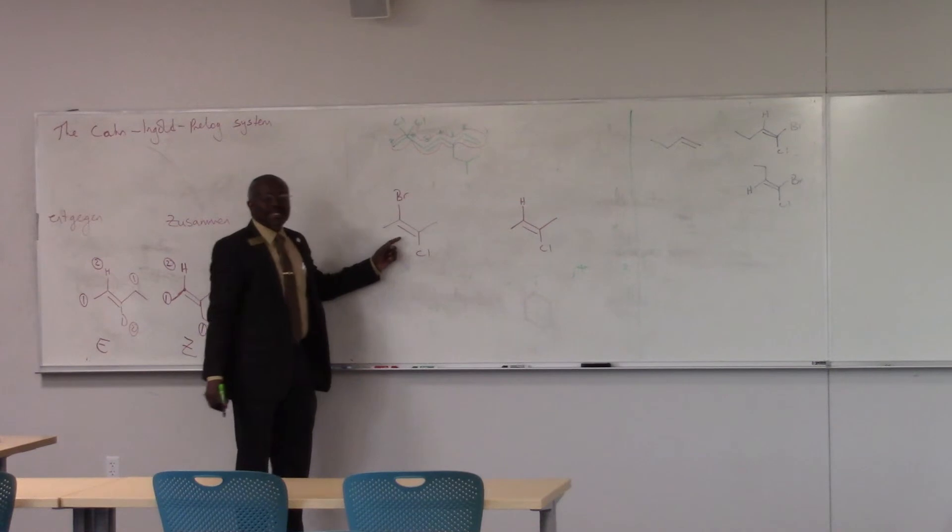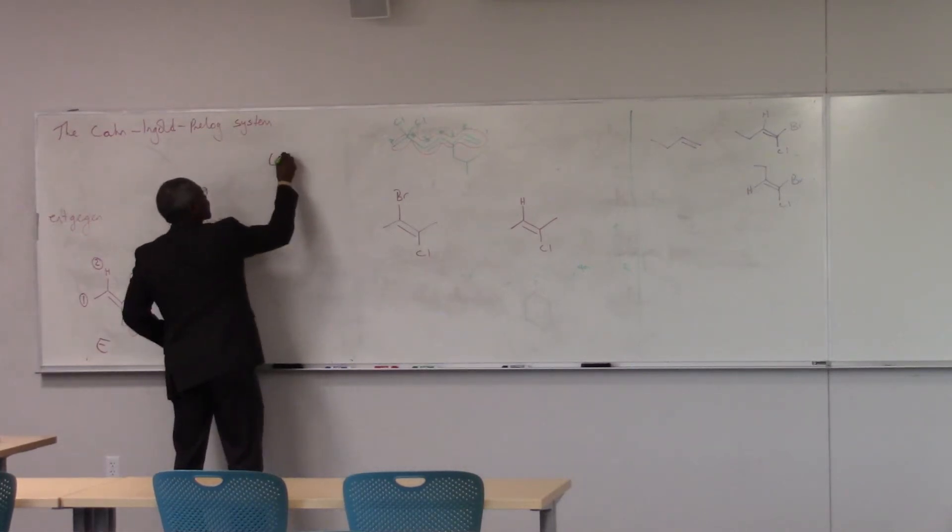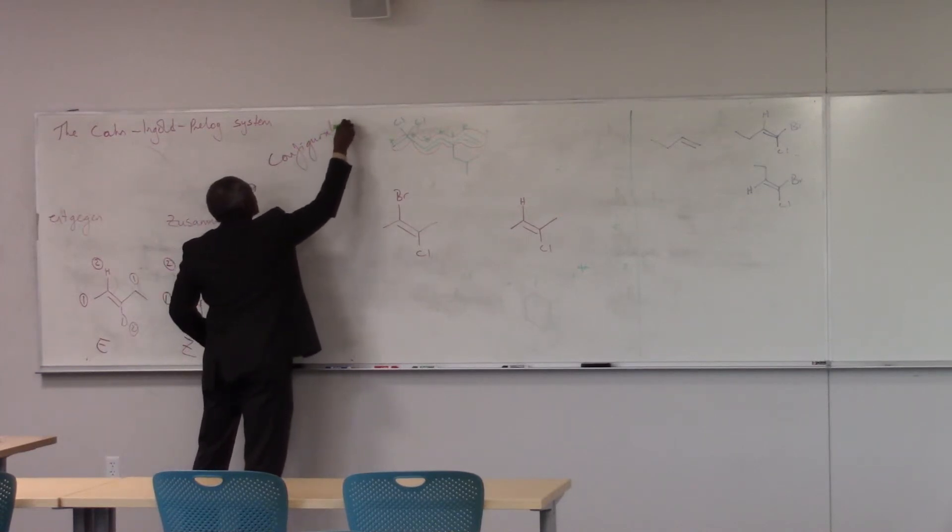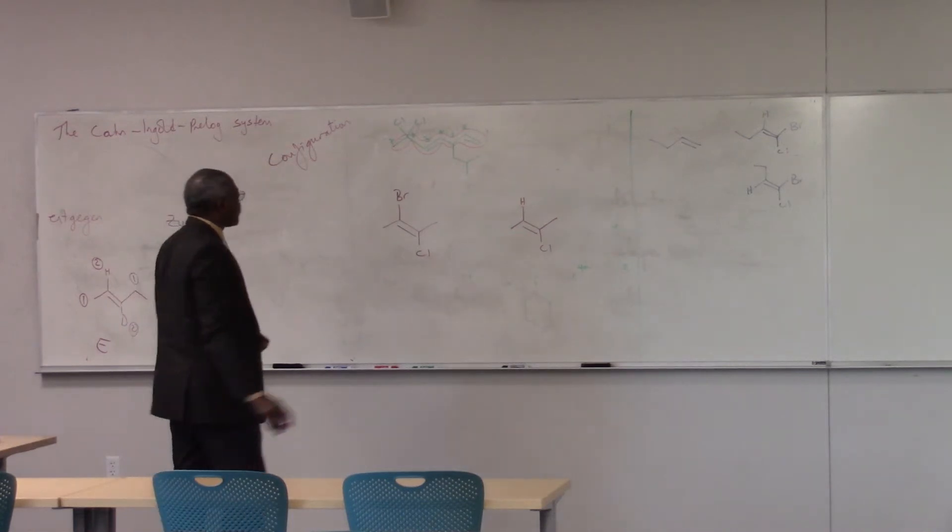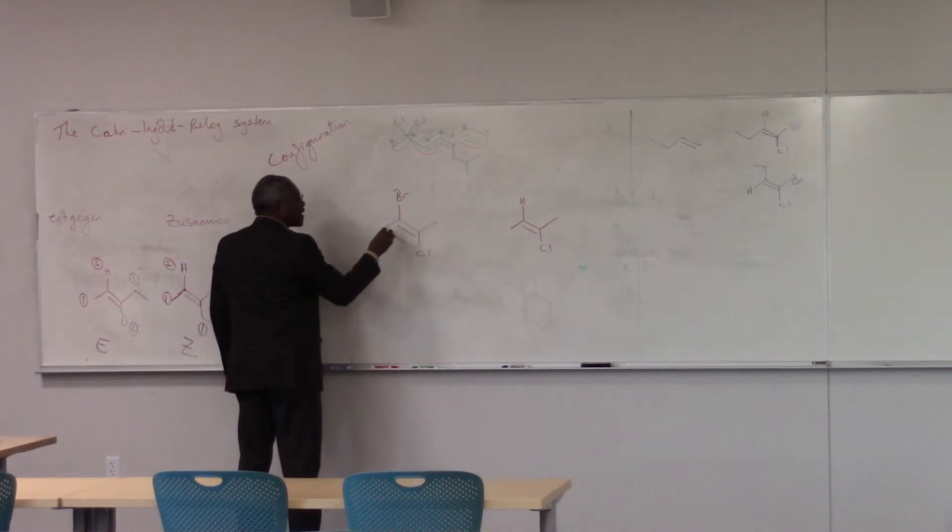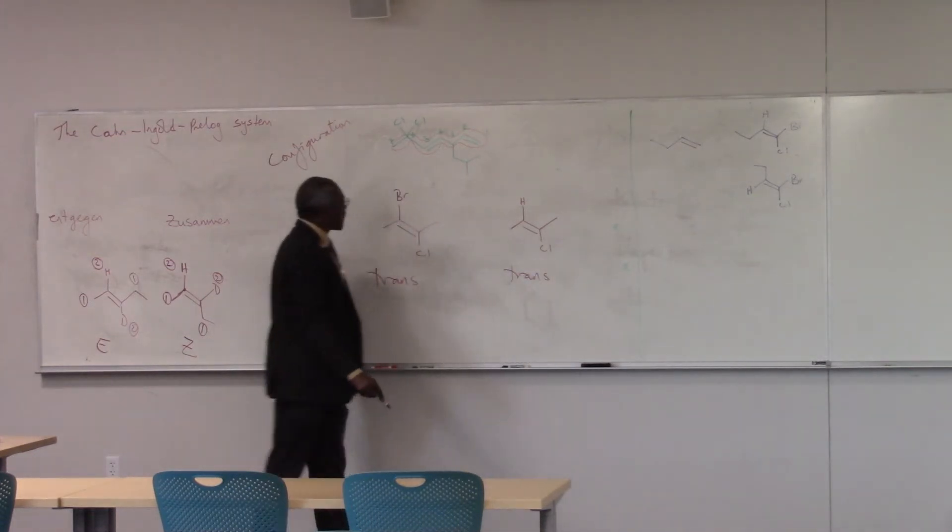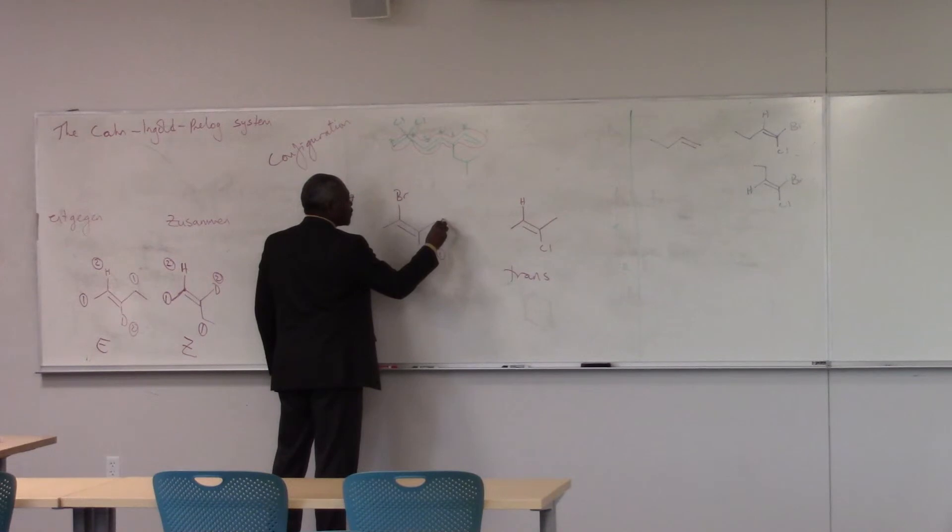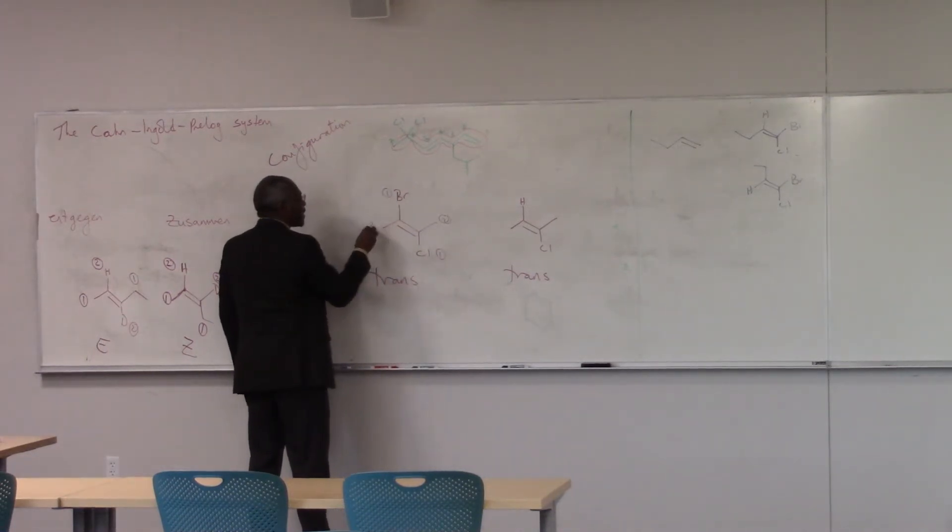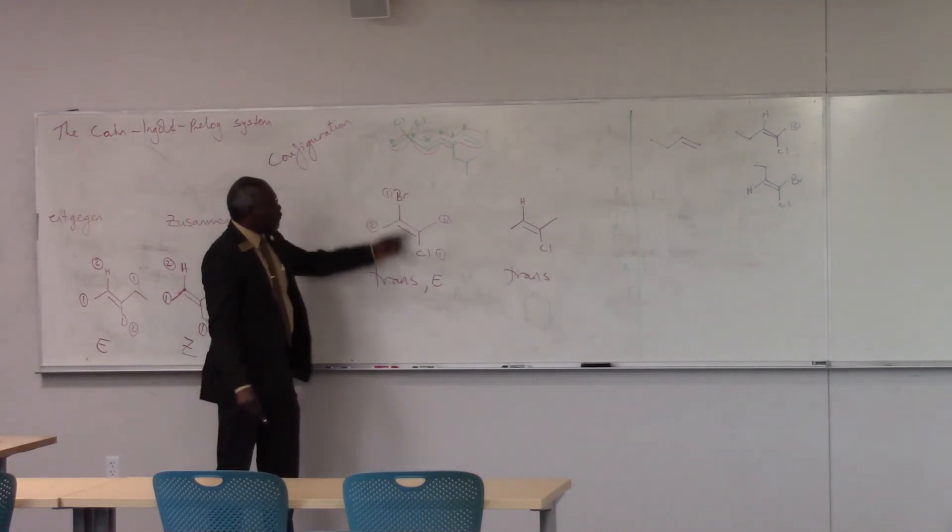So if I wanted to designate configuration, cis/trans and so on, E and Z, those refer to what are called configurations, which are the permanent three-dimensional arrangement of the groups, in this case about the double bond. In this case, I've got my methyl groups on opposite sides. So I'm going to call this trans-2-butene. That's true here too. This is also trans-2-butene. But if I looked at priorities, on this carbon, this is priority one, and that's priority two. On this carbon, this is priority one, and that's priority two. So this is trans, but it's also E. Because my groups of like-priority one and one are on opposite sides.